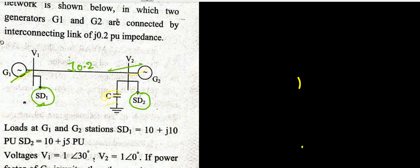C is the shunt capacitance connected at bus 2 (V2) to supply the reactive power requirement at that bus. The complex load at bus 1 is SD1 = 10 + j10 per unit, meaning active power demand P1 and reactive power demand Q1. The complex power demand at bus 2 is SD2 = 10 + j5 per unit.